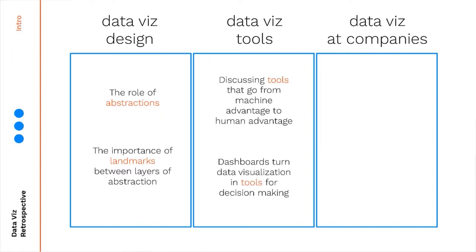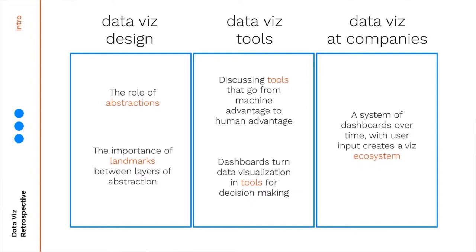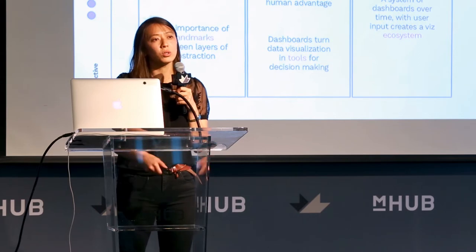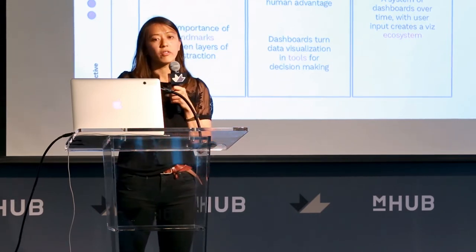The next topic will go into data visualization tools and we're discussing tools in terms of how they sit on a spectrum from machine advantage to human advantage. Many of our tools are there for making data visualizations, but once you put a visualization into a dashboard you're also putting it into this scale of machine advantage to human advantage, because you are trying to help optimize people for decision making. The third topic is about data visualization in companies and why they're different — a system of dashboards, a time component, and user input — all working together to create a visualization ecosystem.